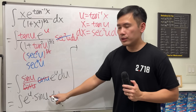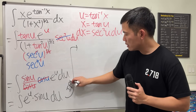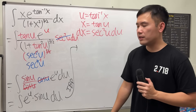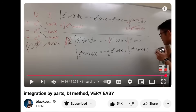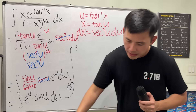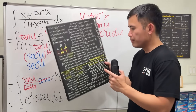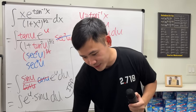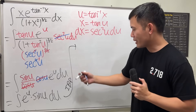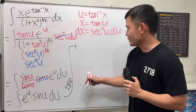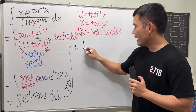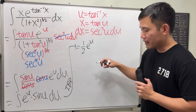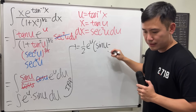You can do this by integration by parts — it's a repeating case. You can also check out my DM method video to see how to do that. I'll just quote the result: this integral equals one-half e to the u, times sine u minus cosine u.